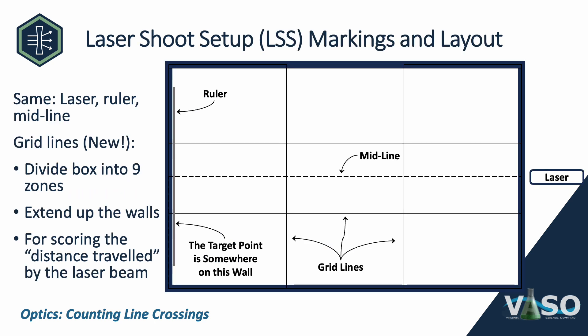We're going to look at the laser shoot setup and how it is laid out. Much of this is the same as last year — the box is the same size, the ruler on the target wall is the same, the laser is in the same place, and the midline down the center is also the same. What's new are these grid lines: four grid lines, two vertical and two horizontal, arranged in a tic-tac-toe configuration that divide the box into nine zones. The lines also extend up the walls, which makes it easier to see them when using templates in the box.